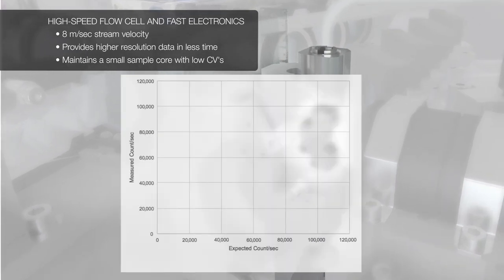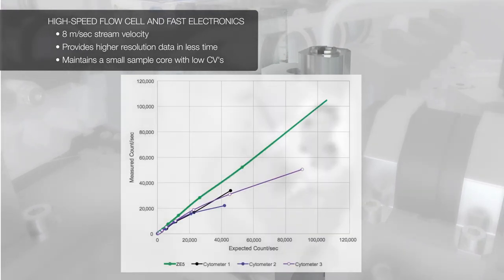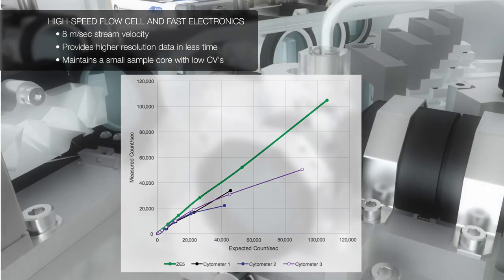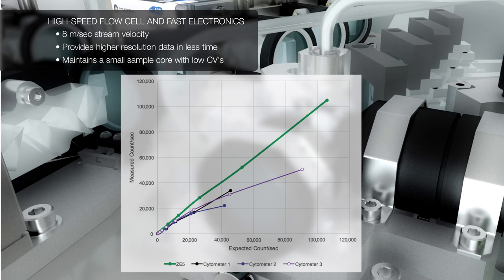The flow cell and electronics of the ZE5i work together to allow you to record every event, even at very high speeds. The ZE5i can detect up to 100,000 events per second, far beyond the capability of other cell analyzers.